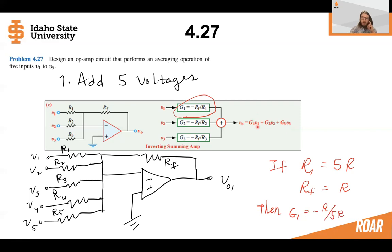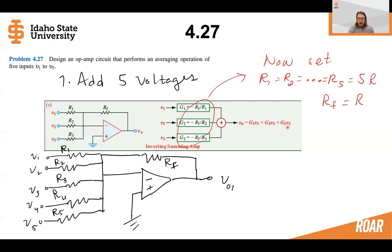So if we think about it, right, we want to add five voltages together, and we want the total gain to be one over five. So that's the averaging operation. So let's think if we can make gain G1, G2, G3, G4, G5 equal to one fifth so that we add them together and divide by five. So we can. We can set R1, R2 equal to R5, and we'll say that that's equal to 5R. So some resistor that's five times larger than RF. So this RF will be equal to R, and each one of these resistors will be equal to 5R.